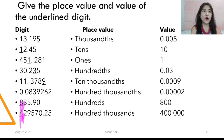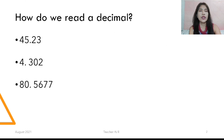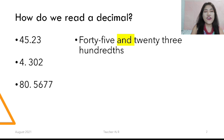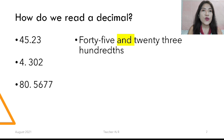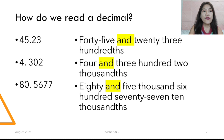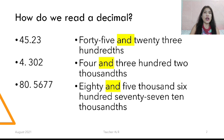So how do we read decimals? We read them as '45 and 23 hundredths' — we are not going to read it as '45 point 23.' Next, we have '4 and 302 thousandths,' and also '80 and 5,677 ten-thousandths.' That's how you read it — you read the whole number first and then add the place value of the last decimal digit.